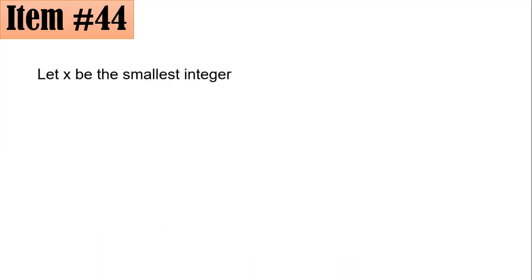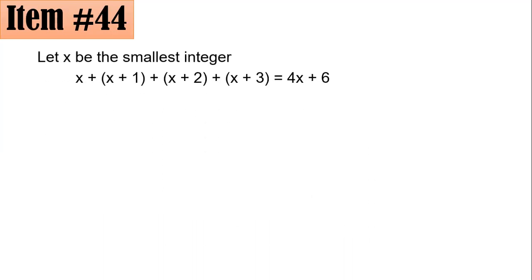If you have four consecutive integers and let x be the smallest, then x plus 1, x plus 2, and x plus 3 are the next three. Adding all of them gives 4x plus 6. Therefore, the sum of any four consecutive integers must be of the form 4x plus 6.